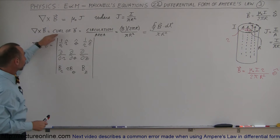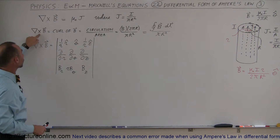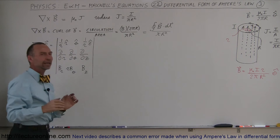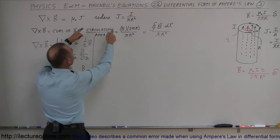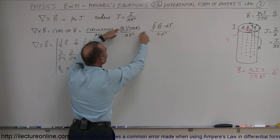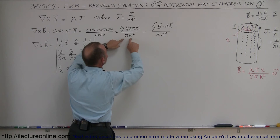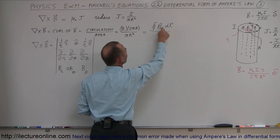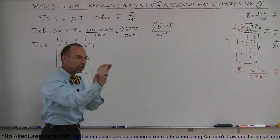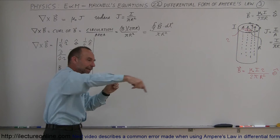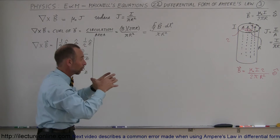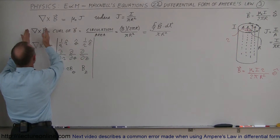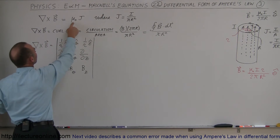This is what we call the curl of B — that's the del operator crossed with the B vector, the magnetic vector. By definition it means the circulation divided by the area. The circulation really means the strength of the B field times the circumference of that path divided by the area. The circulation can also be defined as the line integral of the B field times dl — dl being a small line segment along the B field integrated all the way around, which means times 2πr, the circumference of that circle, divided by the area. That's what we mean by the curl of B equals μ₀ times J.